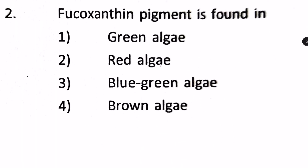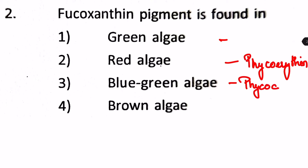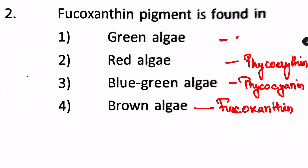Fucoxanthin pigment is found in: green algae, red algae, blue-green algae, or brown algae? Green algae mostly has chlorophyll, red algae has phycoerythrin, blue-green algae has phycocyanin, and brown algae has fucoxanthin. So clearly our answer is number 4, brown algae.